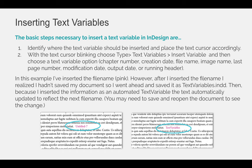Then choose a text variable option. They are: chapter number, creation date, file name, image name, last page number, modification date, output date, or running header.